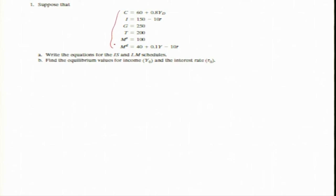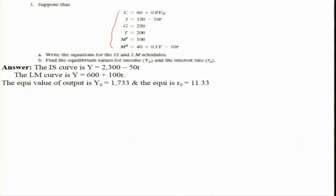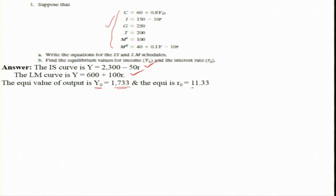Given some values for relevant variables, we write the equation for the IS and LM schedules and find the equilibrium values for income and interest rate. The IS curve can be written as Y equals this expression, and the LM curve can be written similarly. Plugging all these values into the IS and LM equations, equating the IS curve with the LM curve, we find the equilibrium level of income is 1733 and the equilibrium interest rate is 11.33.